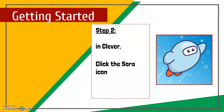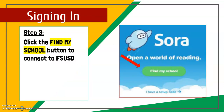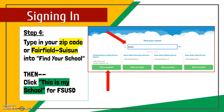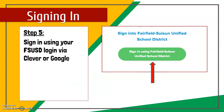Once you have the app, click the Sora icon. The first time you open it, you'll need to connect to FSUSD by clicking the 'Find My School' button. Type in your zip code or 'Fairfield Suisun' — do not use your individual school site like Rolling Hills Elementary or Rodriguez High School. Then click the green 'This is my school' button for Fairfield Suisun Unified School District.